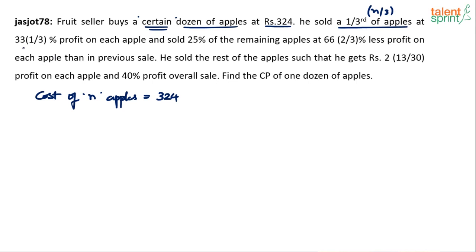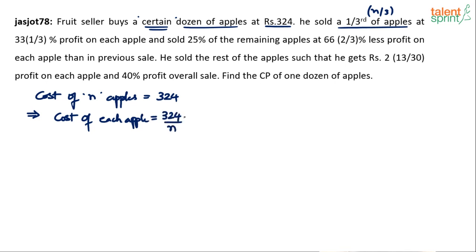He sold n/3 apples at 33 and 1/3 percentage profit on each apple. Note that 33 and 1/3% is nothing but one-third profit on cost price. The cost price of each apple is 324 by n, since n apples cost 324. So the profit on each apple in this first sale is one-third of 324 by n. After that, he sold 25 percent of the remaining apples.